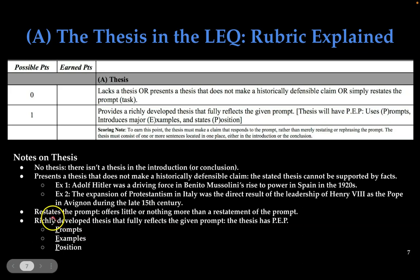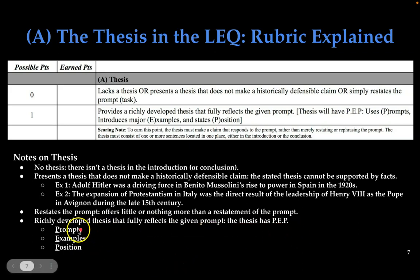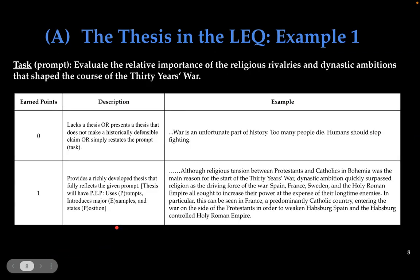Additionally, what you can't do is simply restate the prompt — you can't offer just a reformatting of the words. You need to show that you actually know more than what is simply on the paper. Again, use PEP: use some parts of the prompt, use examples, and of course take a position.